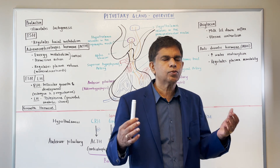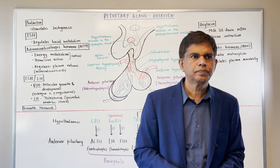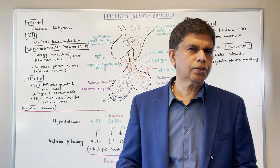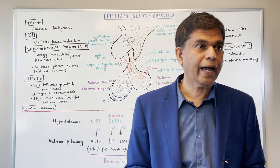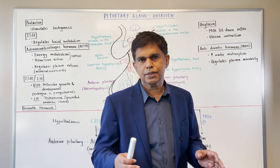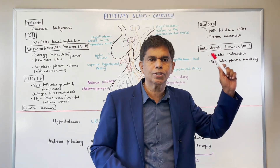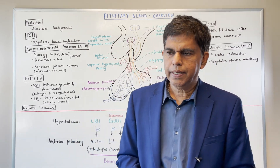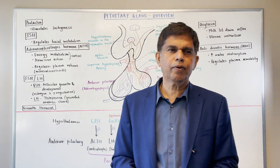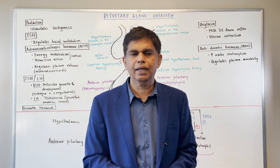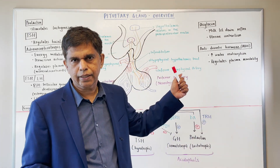Which pathological condition involves decreased ADH? Diabetes insipidus. The usual symptoms are intense polyuria and inability to concentrate the urine because of lack of ADH. What about increased ADH? SIADH - syndrome of inappropriate ADH - which is the most common cause of euvolemic hyponatremia in the United States. It can be caused by tumors such as lung tumors and brain tumors.